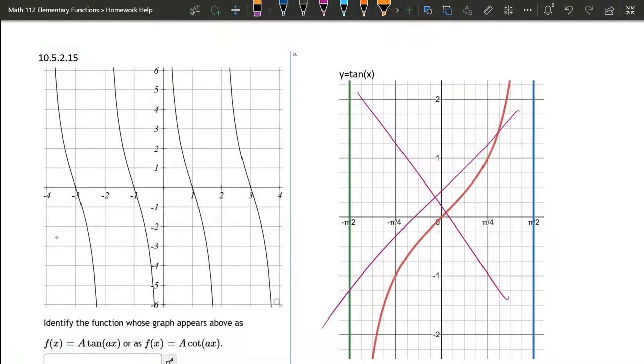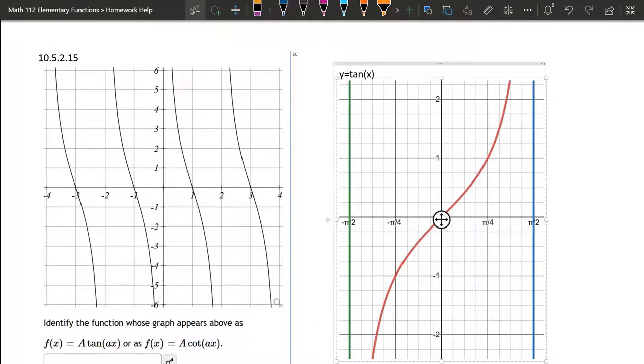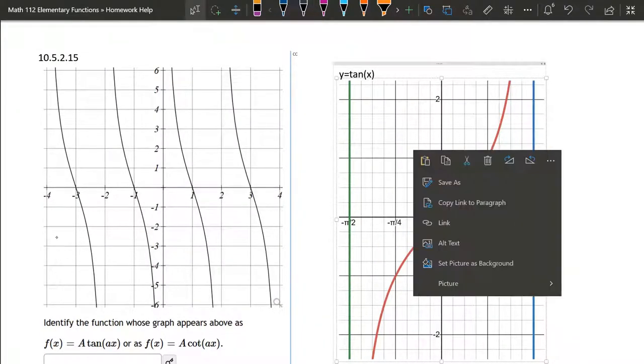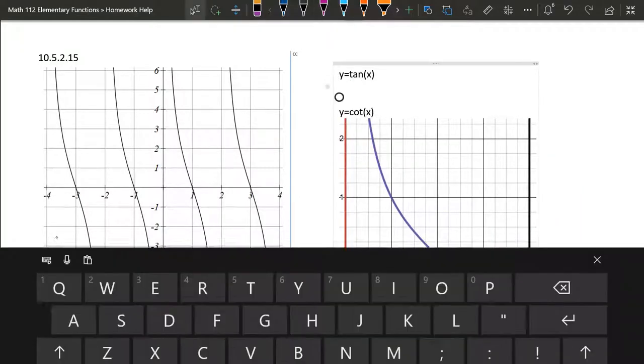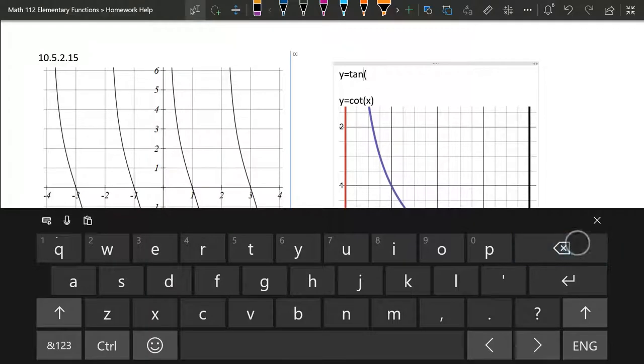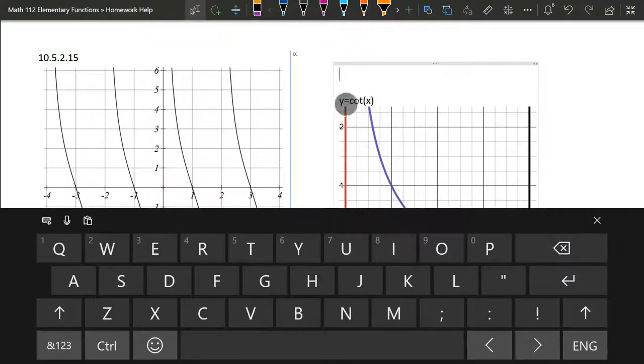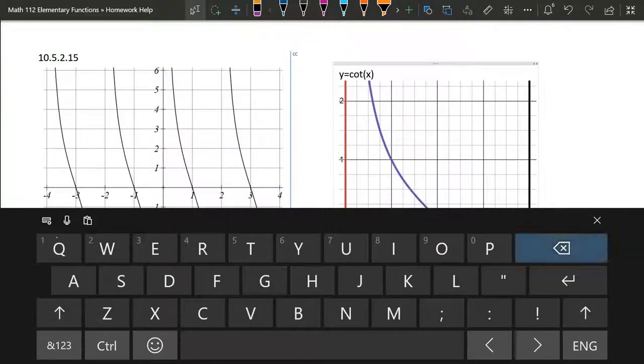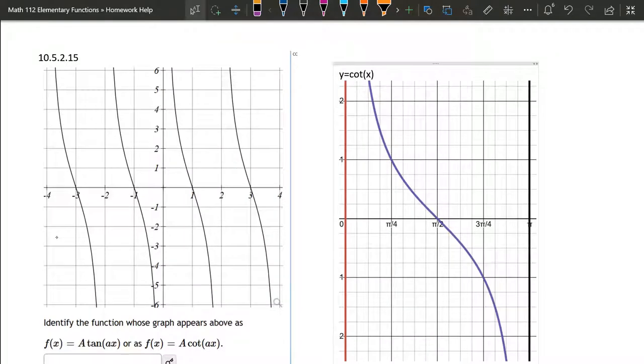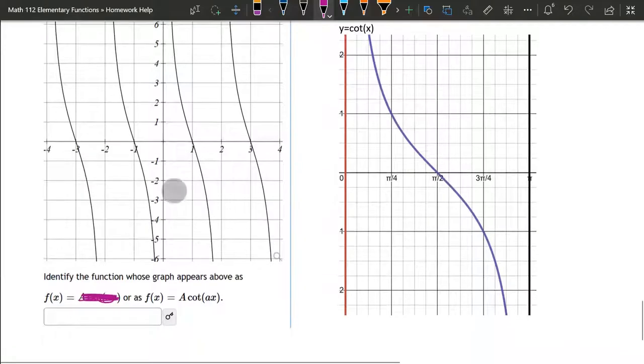So let's go ahead and get rid of this tangent graph here. So now we're just left with cotangent here.